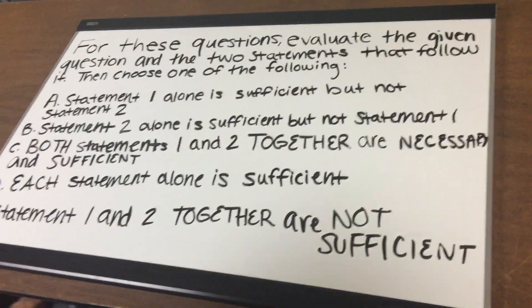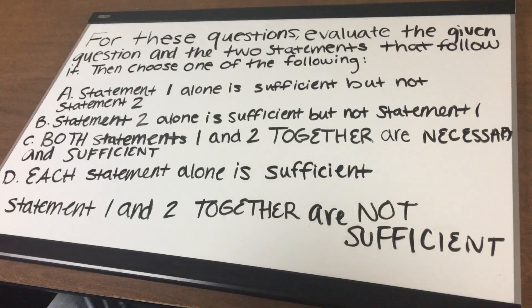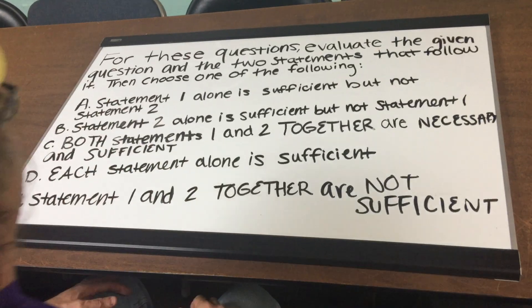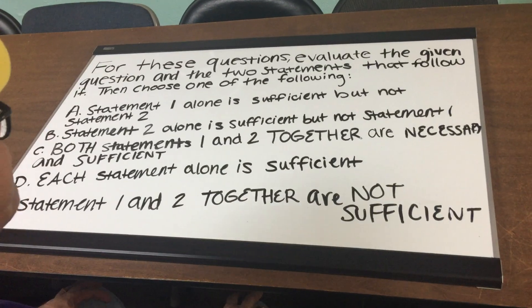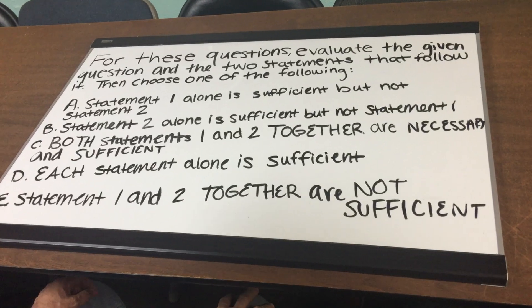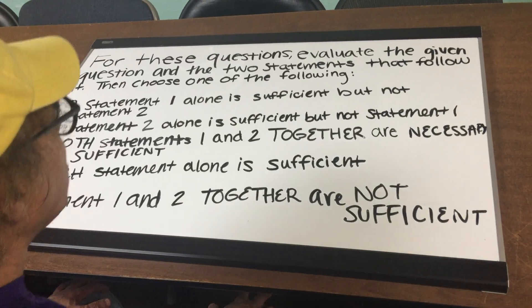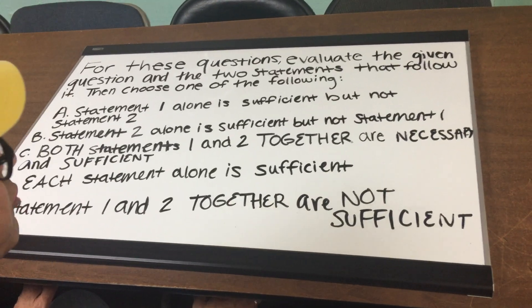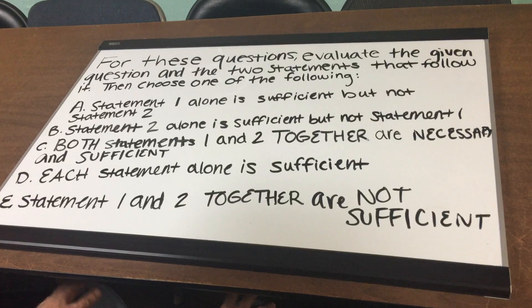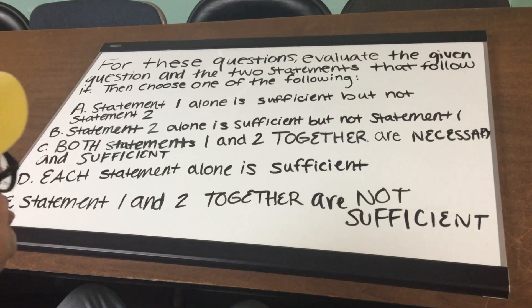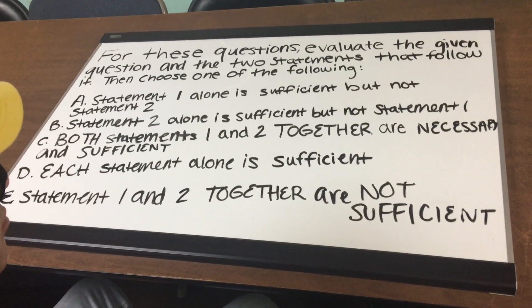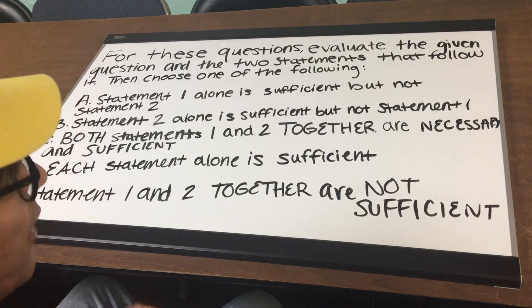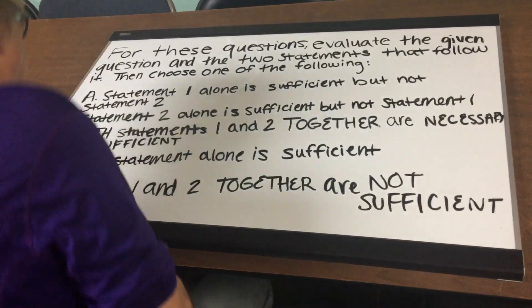For these questions, we're going to evaluate the given question. You're going to think of a question as a statement and then choose one of the following: A) Statement 1 alone is sufficient but not statement 2. B) Statement 2 alone is sufficient but not statement 1. C) Both statements 1 and 2 together are necessary and sufficient. D) Each statement alone is sufficient. E) Statement 1 and 2 together are not sufficient enough to answer the problem.